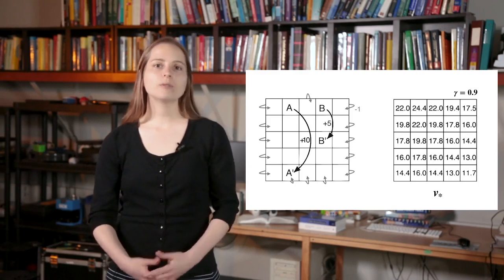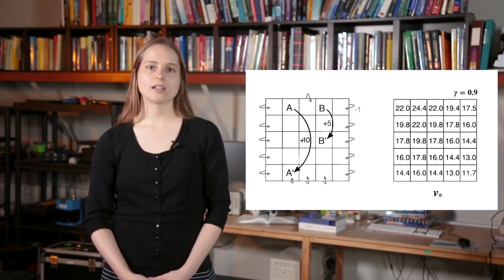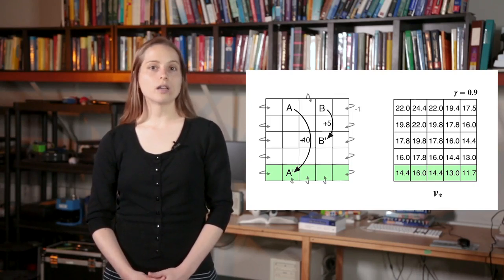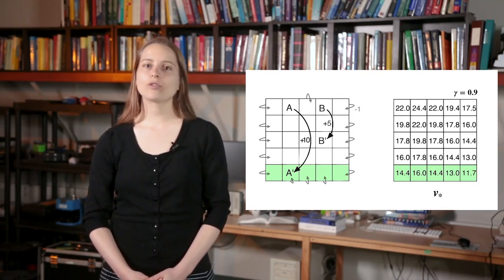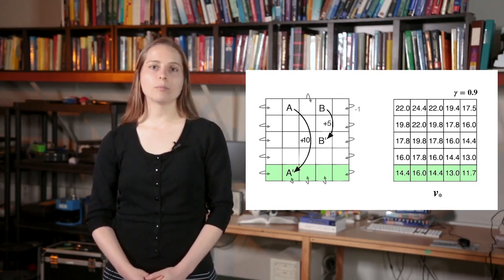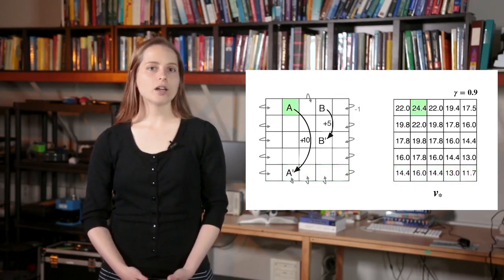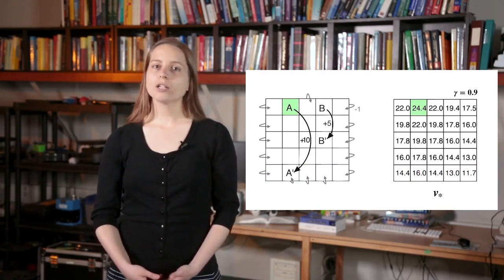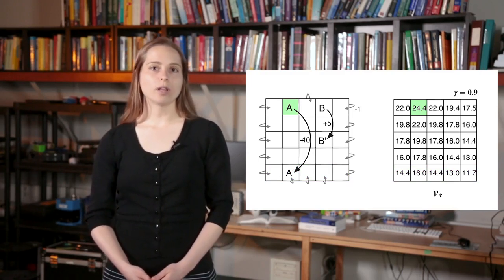Here are the associated optimal values for each state. Notice that unlike before, the values along the bottom are not negative. Unlike the uniform random policy, the optimal policy won't ever choose to bump into the walls. As a consequence, the optimal value of state A is also much higher than the immediate reward of plus 10.